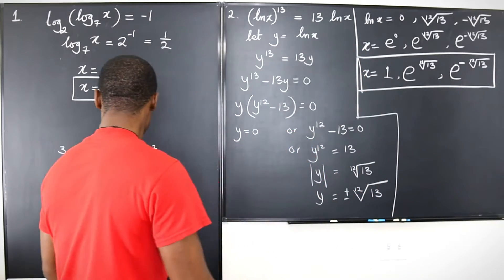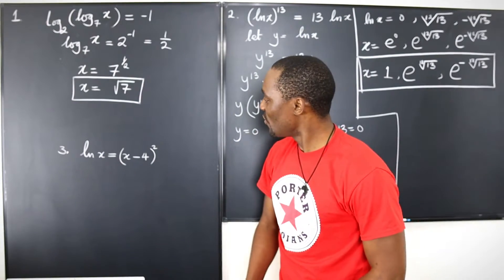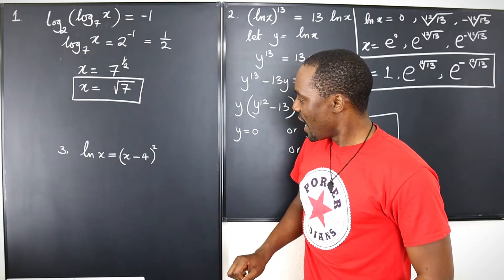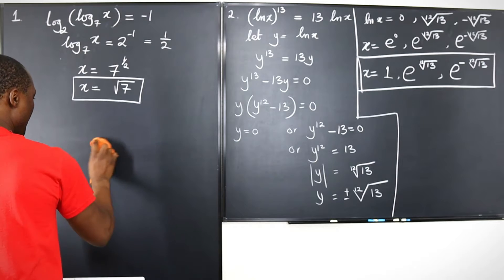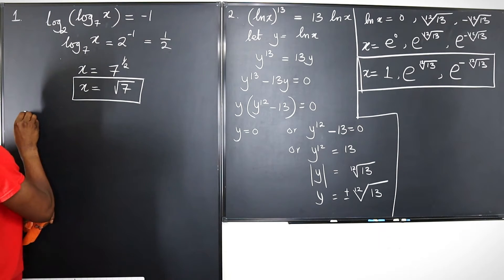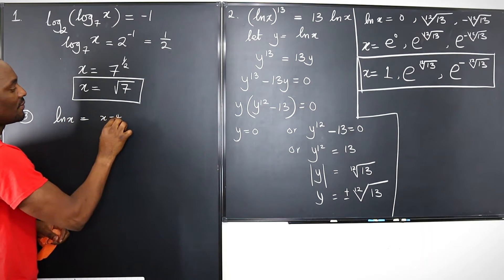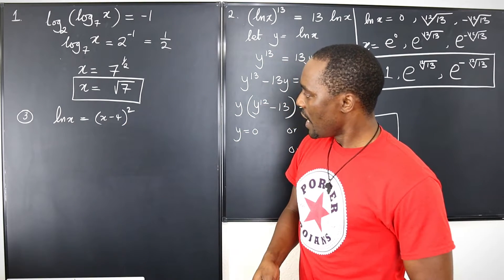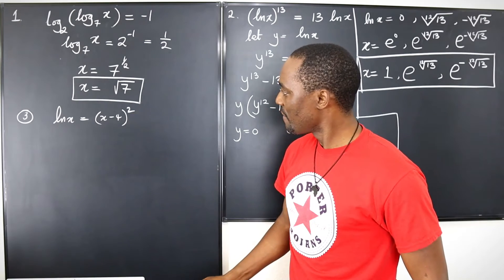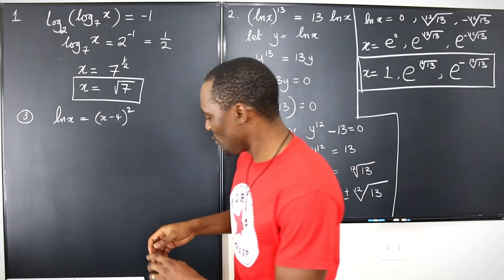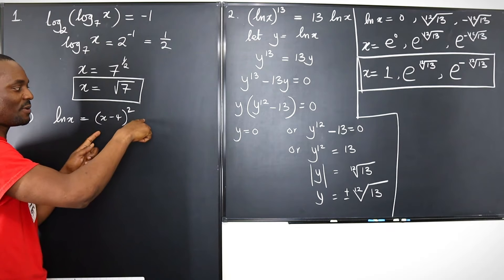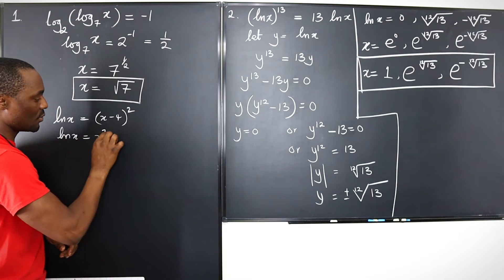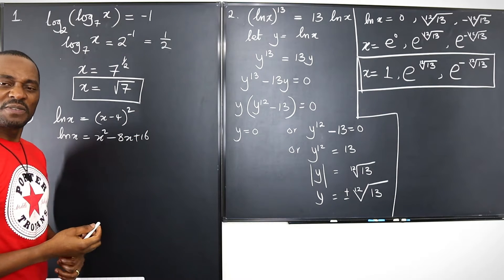Let's go to the third one. The third one looks crazy, actually — you're equating ln(x) with a polynomial. We haven't done anything like that so far. Number three: ln(x) equals (x minus 4) squared. So you have a logarithm function equated to a polynomial. This is actually a perfect square. If you open this up, you get x squared minus 8x plus 16.